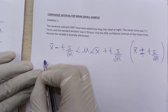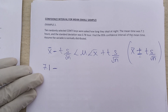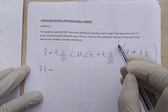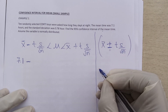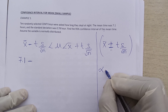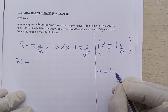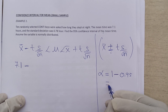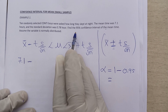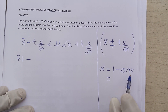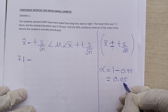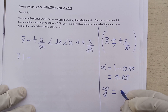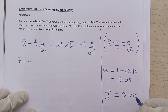According to the question, the sample mean is 7.1. To find T, you use the confidence level given. First, find alpha, the level of significance: alpha equals 1 minus 0.95, where 0.95 comes from 95 divided by 100. So alpha equals 0.05. Then find alpha divided by 2: 0.05 divided by 2 gives 0.025.